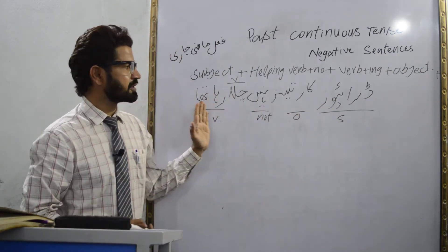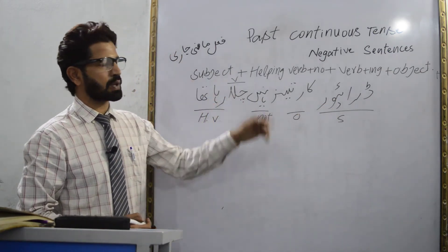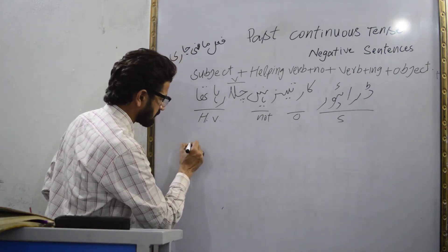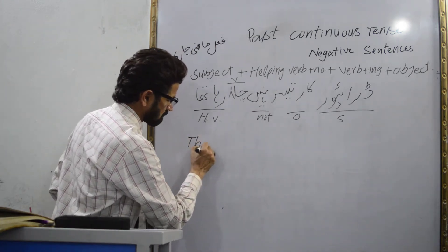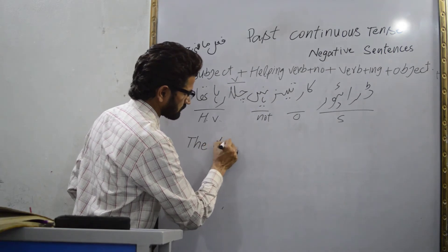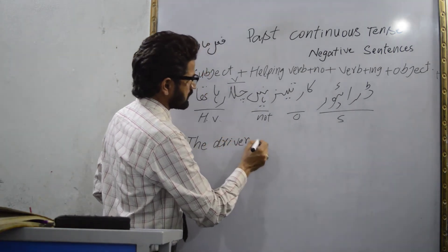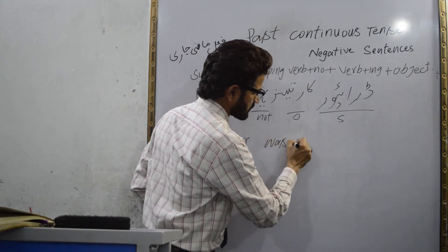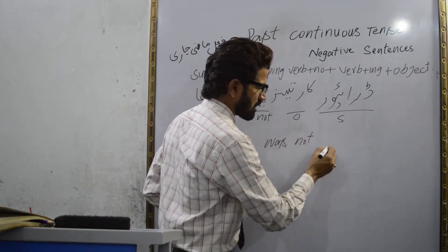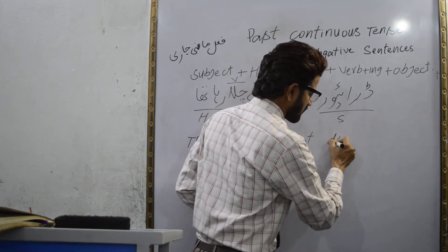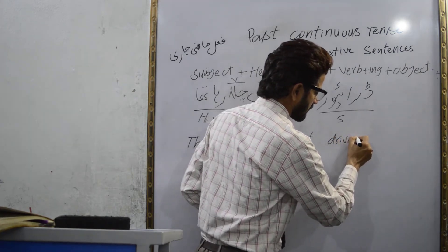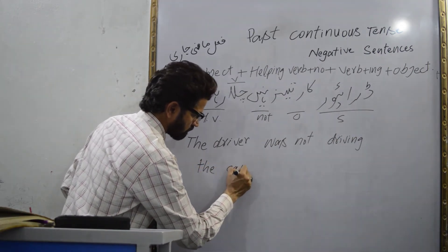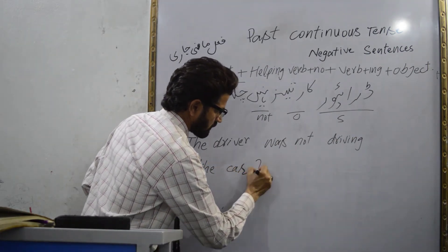All of this sentence, we have divided according to our method. First of all, write subject: 'driver' — the driver. It is a singular noun, so helping verb 'was' aayega. Was not driving the car fast.